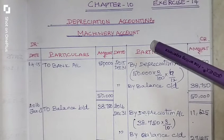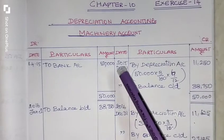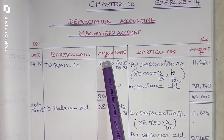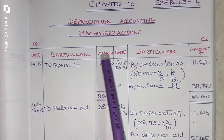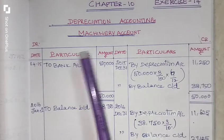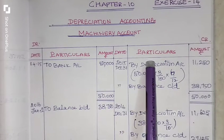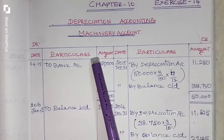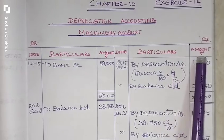Let's prepare the machinery account in the ledger account. The format of the ledger account is divided into two sides — debit side and credit side. The debit side has four columns: Date, Particulars, JF, and Amount. The credit side also has four columns: Date, Particulars, JF, and Amount.